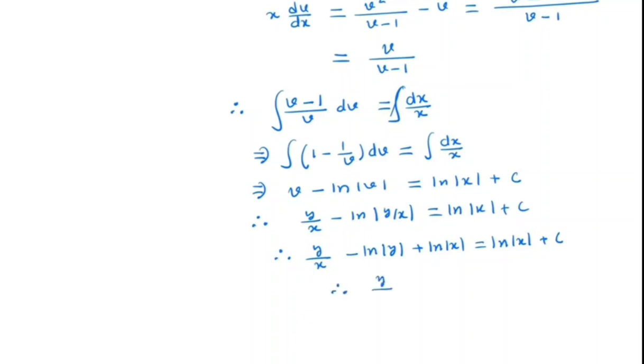So by canceling ln x both sides we have y by x minus ln y is equal to c, which is the general solution.